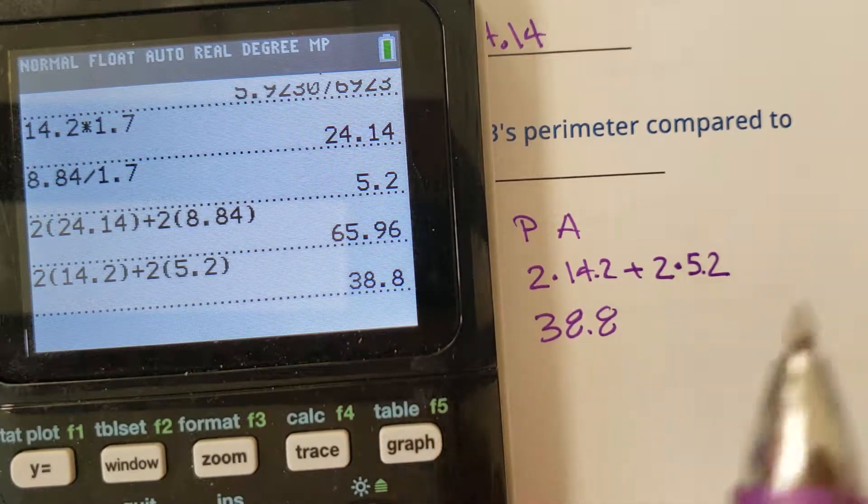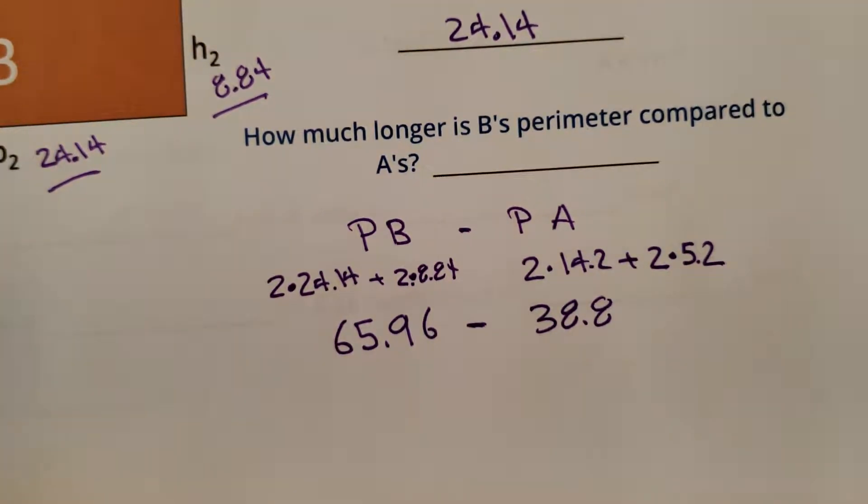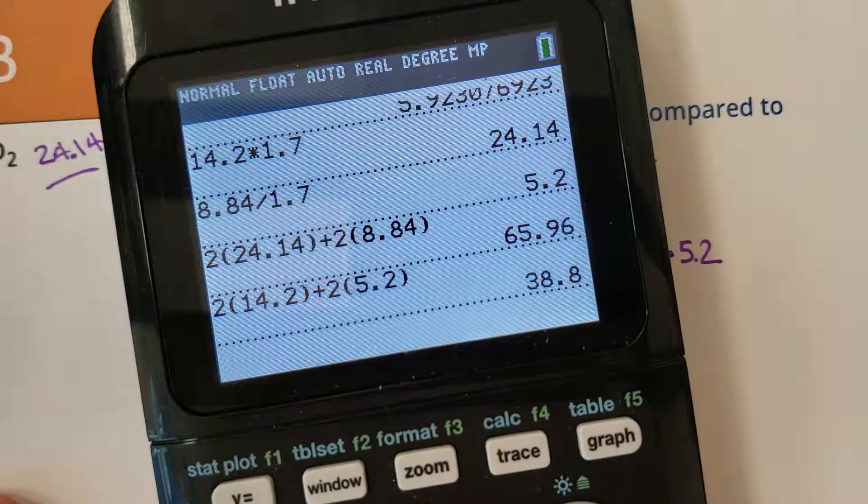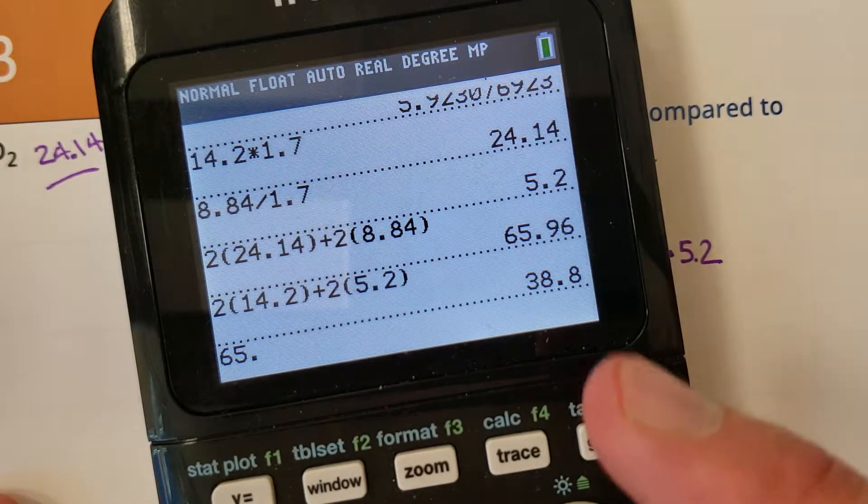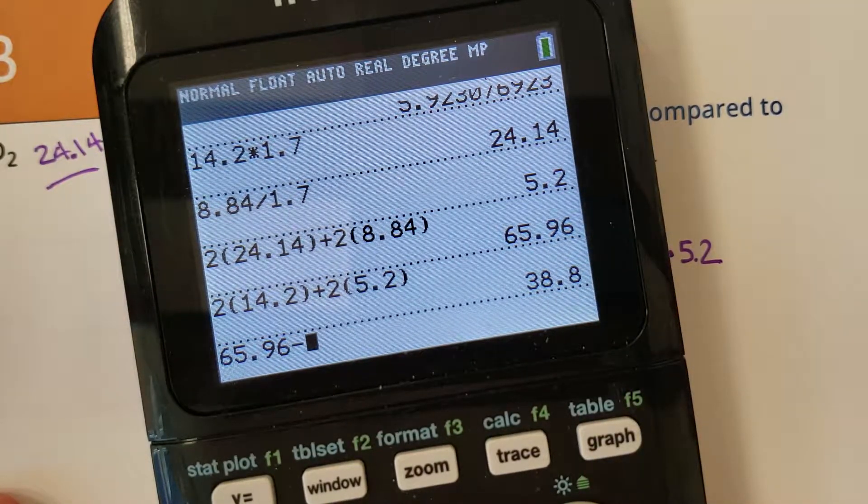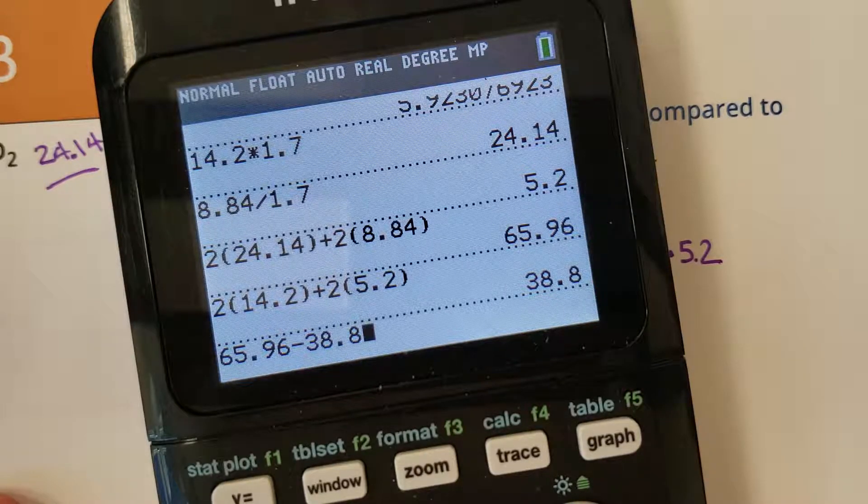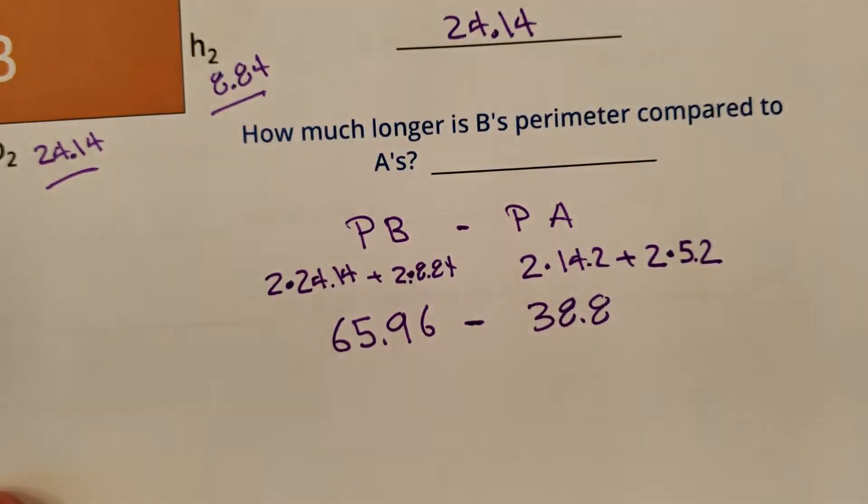No? 5.2, 14.2. Okay. All these decimals, I feel like I'm making the goof. Here we go. So 65, what was it again? 0.69. They're all right there. Good job, Mr. Calculator. Minus 38.8 is going to be 27.16. Okay.